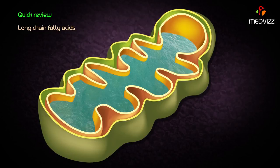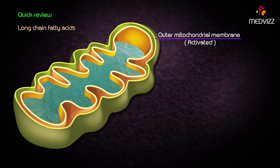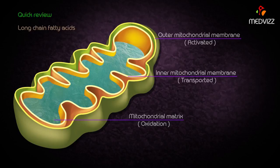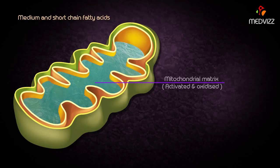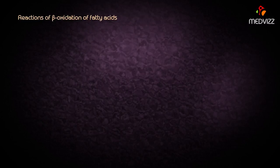Long chain fatty acids are activated in the outer mitochondrial membrane and are transported across the inner mitochondrial membrane, and oxidation takes place inside the mitochondrial matrix. Medium as well as short chain fatty acids are activated and oxidized directly in the mitochondrial matrix.